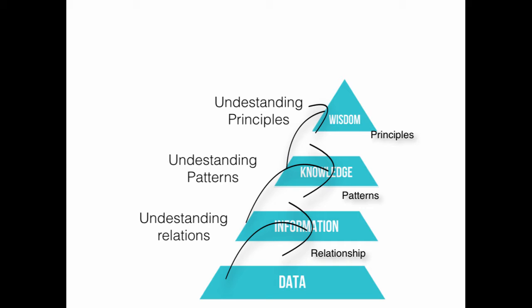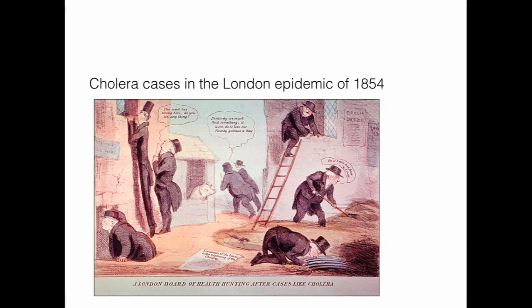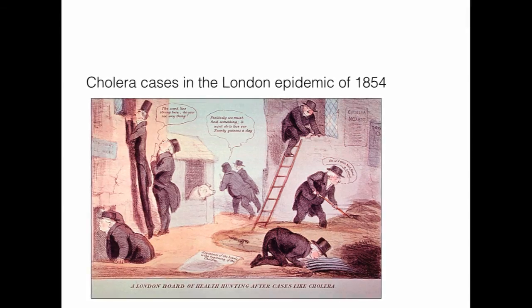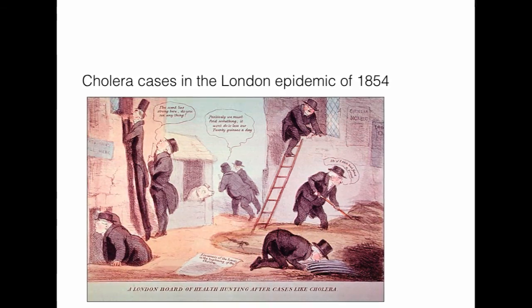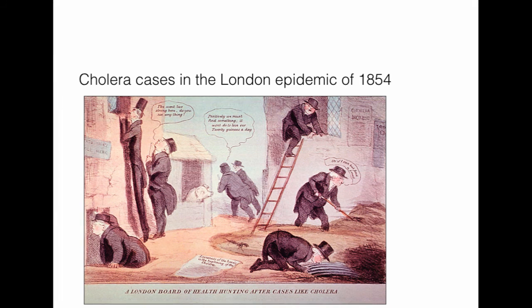To explain this, I will tell one story. This is a real story which happened in 1854. In 1854, in London, there was a cholera outbreak. People were getting sick and others were trying to know what the cause of the problem was. They were seeing this for the first time.